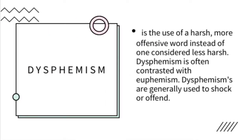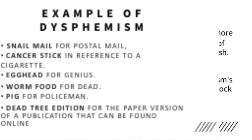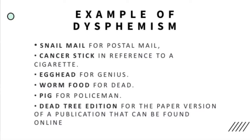Dysphemism is the use of a harsh or more offensive word instead of one considered less harsh. Dysphemism is often contrasted with euphemism. Dysphemisms are generally used to shock or offend. These are examples of dysphemism: 'snail mail' for postal mail, 'cancer stick' in reference to a cigarette, 'egg head' for genius, 'worm food' for death, 'pig' for policemen, 'dead tree' for the paper version of a publication that can be found online.